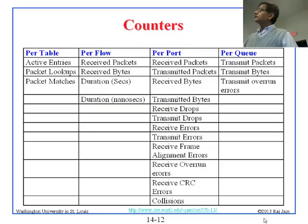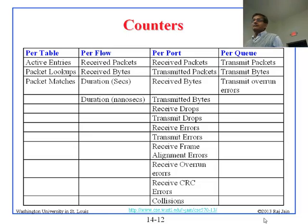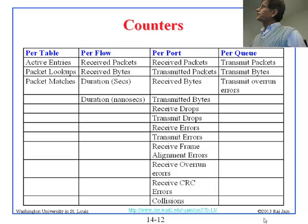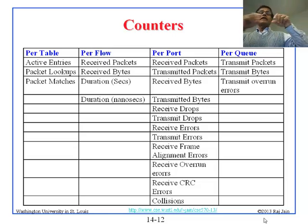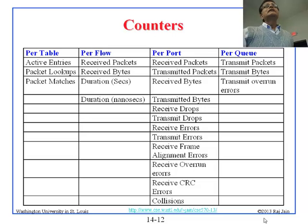Counters are maintained at multiple levels. For each table: count active entries, packet lookups, and matches found. For each flow: count packets received, bytes received, and duration in seconds or nanoseconds. Per interface (called 'per port' in OpenFlow terminology): count packets received and dropped. For each queue on an interface — which may hold high-priority, low-priority, or other packet types — count packets sent, bytes sent, and overrun errors.